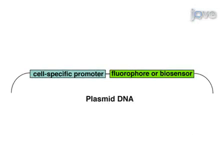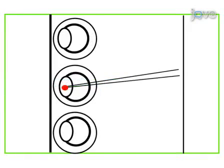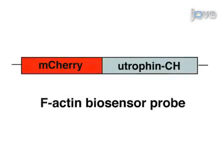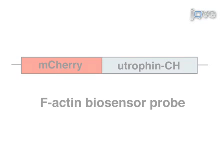To image the behavior of individual cells in vivo, plasmid DNA containing a cell-specific promoter driving expression of a fluorophore or biosensor is injected into zebrafish embryos. Dynamic changes in F-actin distribution are visualized in vivo using a biosensor based on the actin binding domain of utrophin.